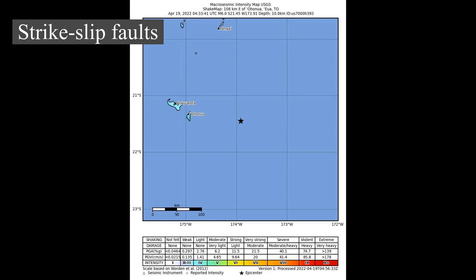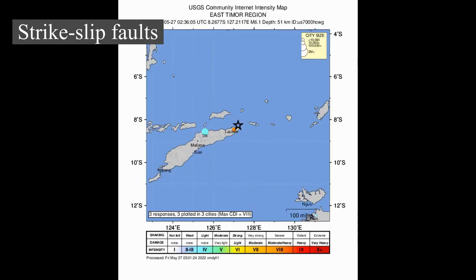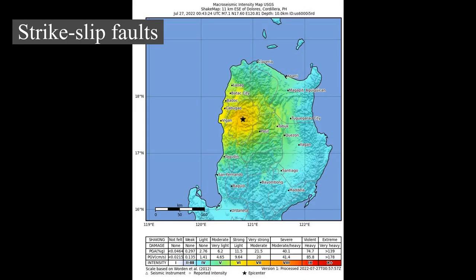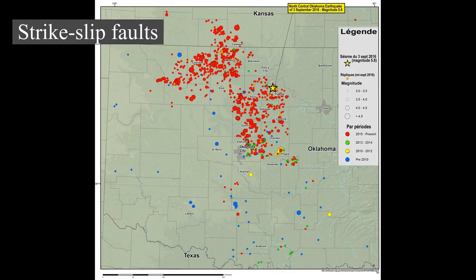This can be understood by considering the direction of the greatest principal stress during faulting. In the case of normal faults, the rock mass is pushed down vertically, so the greatest principal stress equals the weight of the rock mass itself. In the case of thrusting, the rock mass escapes upward, so the overburden equals the least principal stress. Strike-slip faulting is intermediate between the other two types. This difference in stress regime contributes to differences in stress drop during faulting, which affects the radiated energy regardless of fault dimensions.